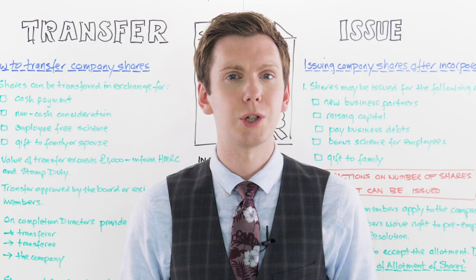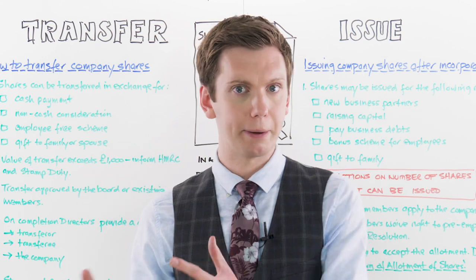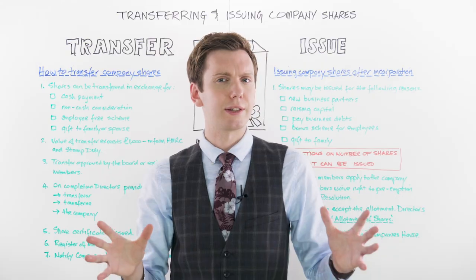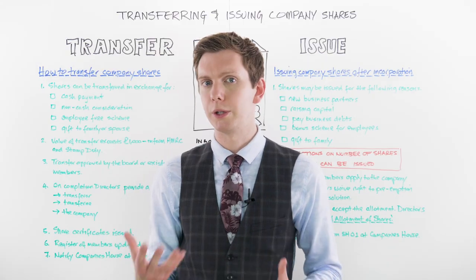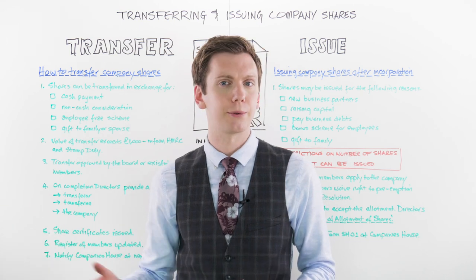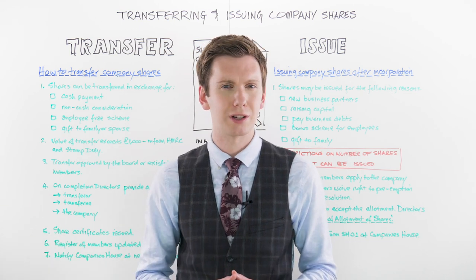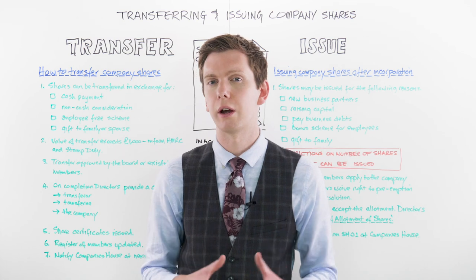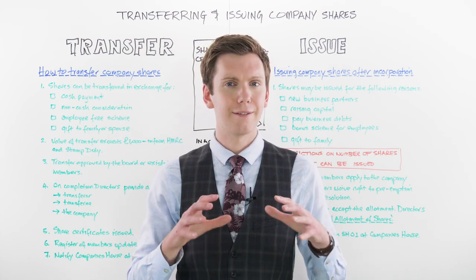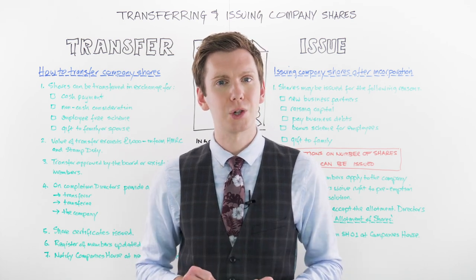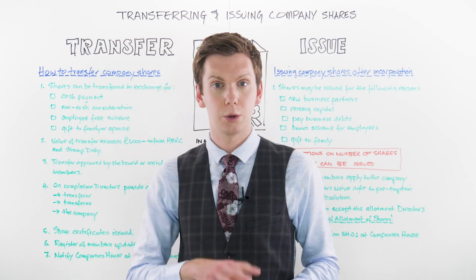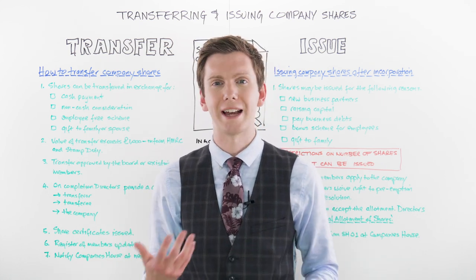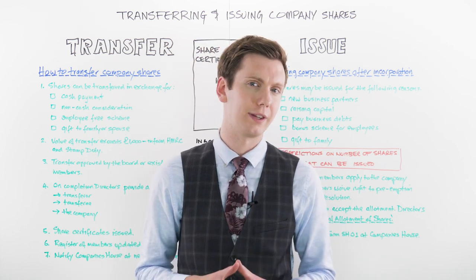To issue company shares, the prospective member or members must make an application to the company. Existing members will usually then need to waive their right to preemption and follow any other provisions described within the articles. Finally, the allotment should be accepted by the directors, or sometimes by the shareholders, depending on what is provided for within the articles.